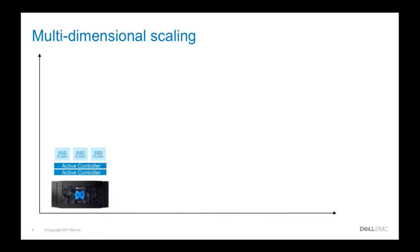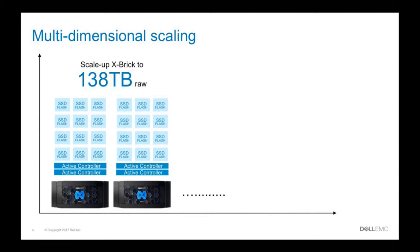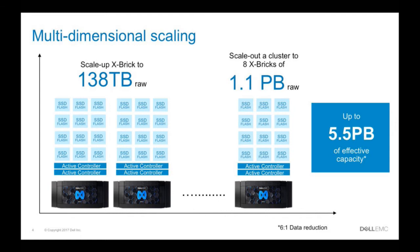XtremIO is built on what we call an X-brick — two controllers and a DAE. You can start small with as few as 18 SSDs. As capacity needs grow, you can add more SSDs, and a single X-brick can grow up to 138 terabytes of raw capacity. If you need to grow further, you can drop another X-brick into the cluster, linearly increasing both performance and capacity. It can scale up to eight clusters delivering up to 1.1 petabytes of raw storage, and factoring in typical data reduction of 5:1 to 6:1, that can reach 5.5 petabytes of effective capacity.